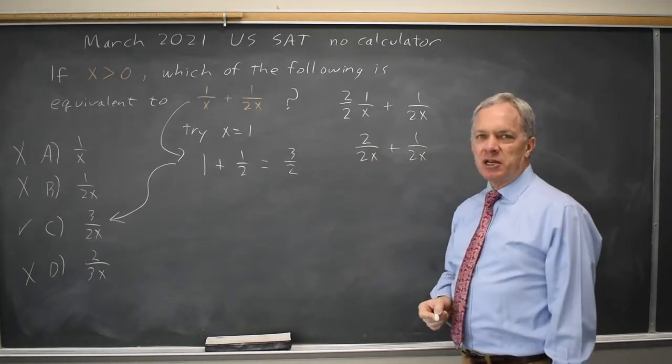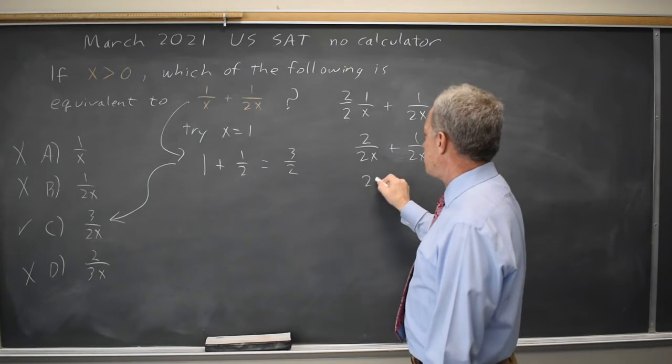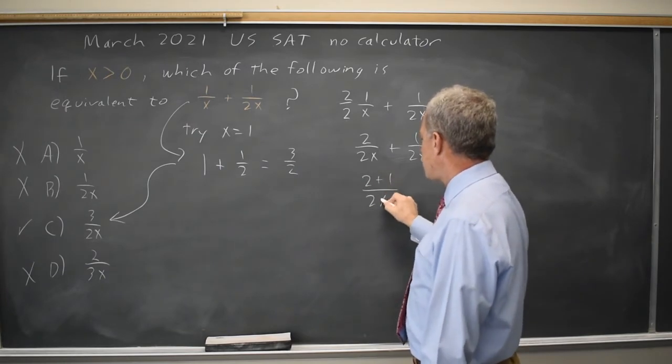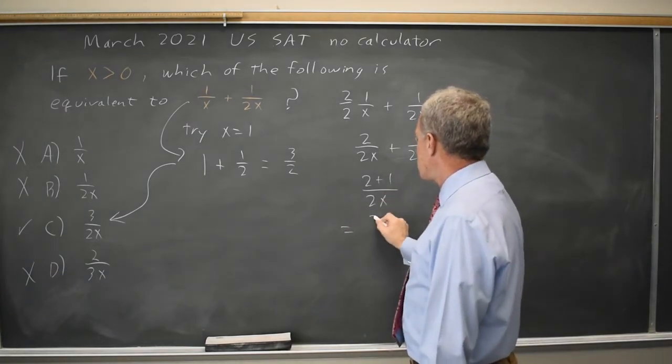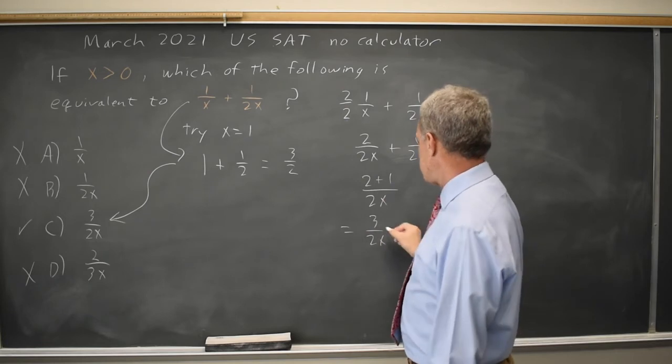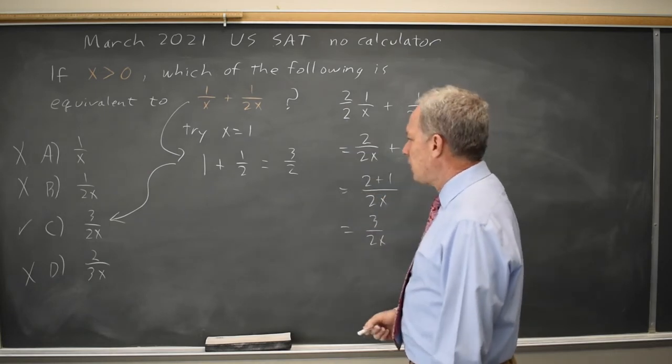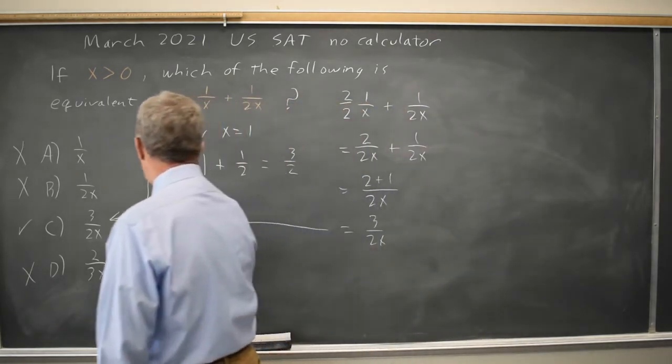Now that I have the same denominator, I can add numerators. This is 2 plus 1 over 2x, which is 3 over 2x. And that is the answer I got by substituting in numbers.